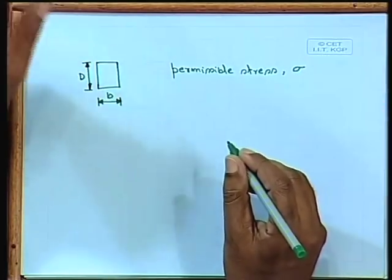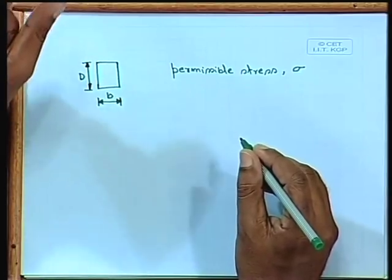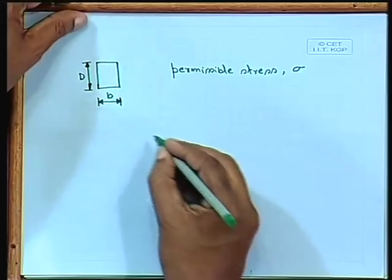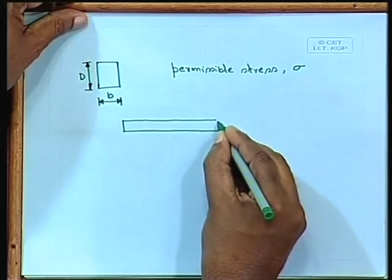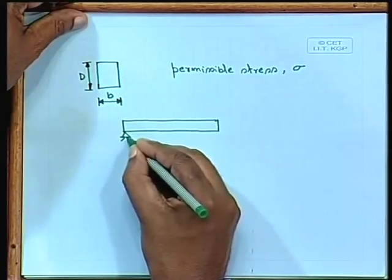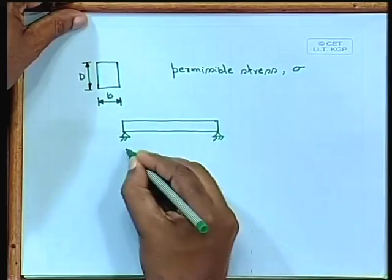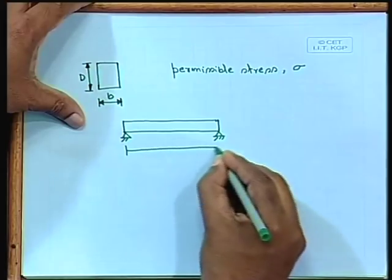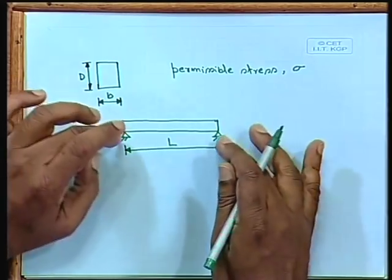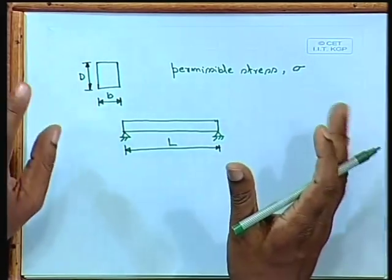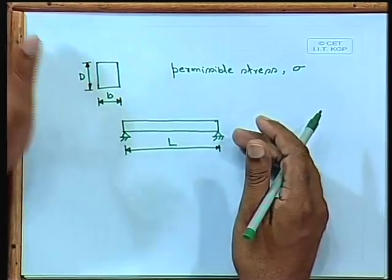For this beam section, we can consider a simply supported beam with a certain span L. We can consider different kinds of load — a concentrated load at the center, UDL, or any arbitrary load. What we need to find out is the design philosophy: we have to find out the maximum moment. The beam has two governing parts: bending moment and shear force. For now, we are considering only bending.